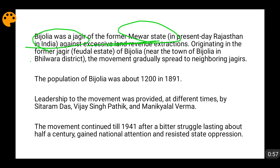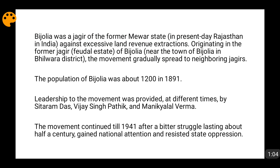This movement was against excessive land revenue exactions. The land revenue was really high, and it was against this excessive land revenue that the Bijouliya movement was started. There was a Bijouliya Jagir and many nearby Jagirs as well. The movement started in the town of Bijouliya and slowly spread to the neighboring Jagirs also.